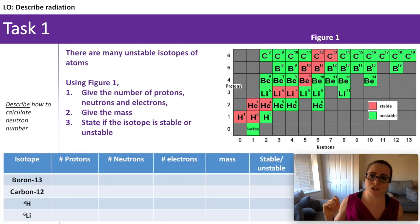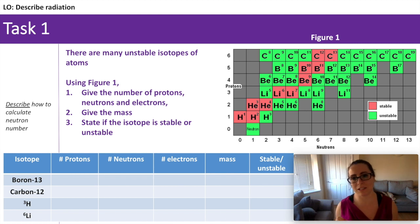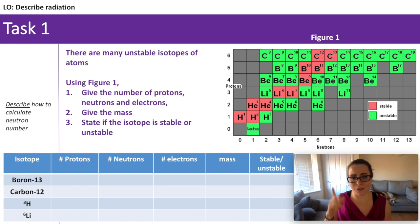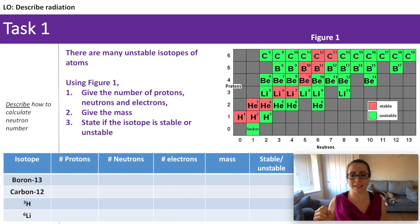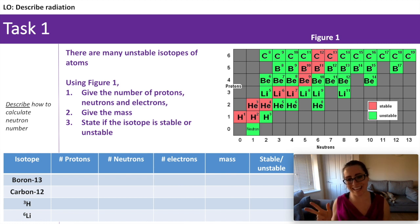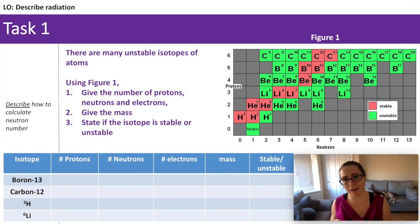This is a lovely grid that shows all the stable and unstable isotopes of the first six elements — hydrogen through to carbon. I would like you to use your problem solving skills to fill in this table. I've put four isotopes down in the first column: boron-13, carbon-12, hydrogen-3, and lithium-6. Can you figure out how many protons, neutrons, electrons, what the mass is, and then use the colour coding to figure out if it is stable or unstable? Pause the video to give yourself time to fill in the table.